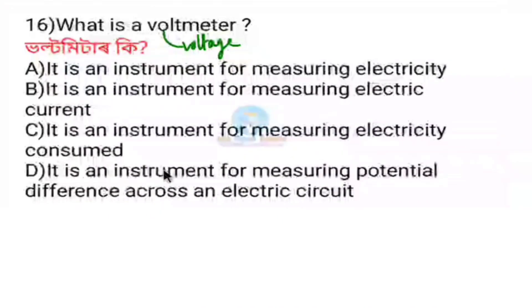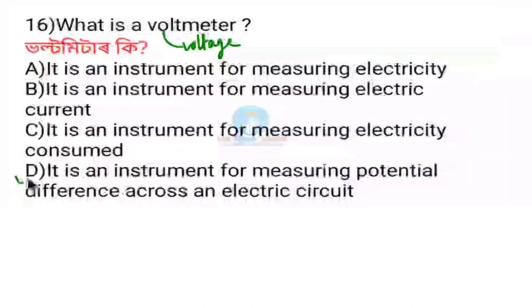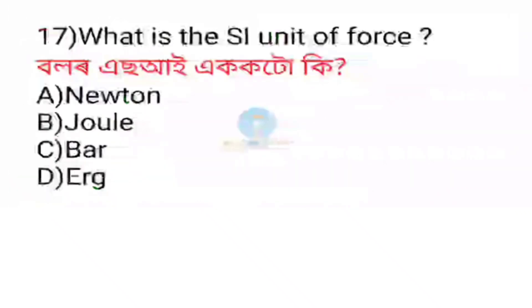A voltmeter is an instrument for measuring potential difference across an electric circuit. Next question: What is the SI unit of force?